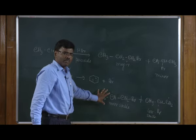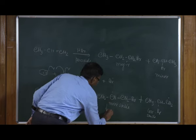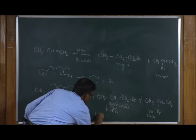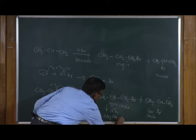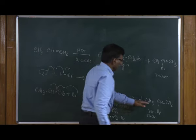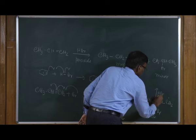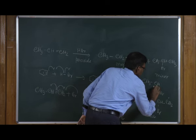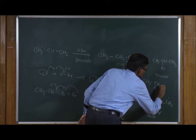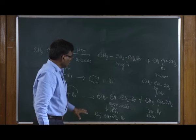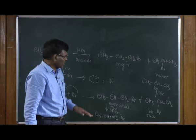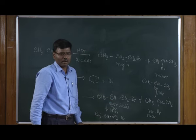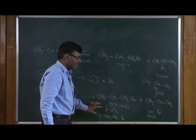The formation of the secondary radical is favored. Once this secondary radical is formed, it can react with another molecule of HBr and abstract the hydrogen atom to give the primary alkyl halide. Similarly, the other pathway through the primary radical reacting with HBr gives the secondary alkyl halide. Therefore, carrying out the reaction in the presence of peroxide gives the primary alkyl halide as the major compound — this is the anti-Markovnikov product.